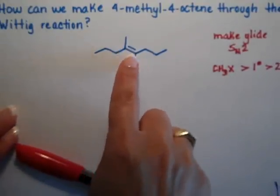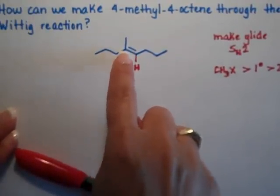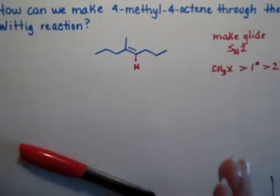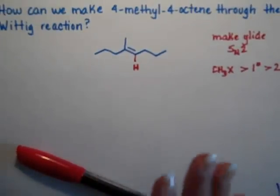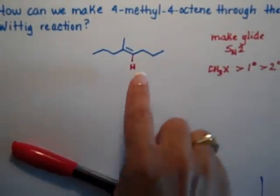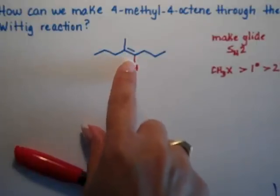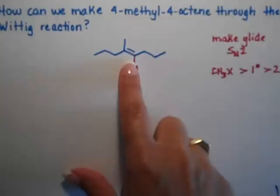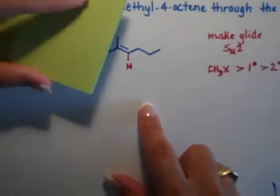One of these two double bonded carbons used to be an alkyl halide. The other one used to be a ketone or an aldehyde. So what I'm going to do is look at the double bonded carbons and see which one is primary and which one is secondary.